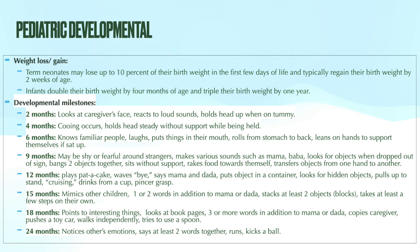By four months of age, infants begin cooing. By six months, everything is going into their mouth and they begin tripod sitting if positioned. By nine months, they can transfer objects between their hands. At 12 months, they should say one to two words in addition to mama and dada, and they also develop their pincer grasp. At 15 months, they should be able to take a few steps on their own. At 18 months, they can point a lot, walk independently, and attempt to use a spoon. At 24 months, they become aware of others' emotions, can put at least two words together, and can kick a ball. Those are some big ones — I've definitely seen a lot of questions with those.